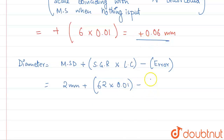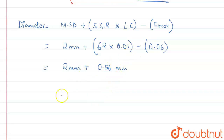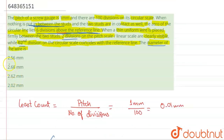So this comes out to be: 2mm + 0.62 − 0.06, which gives us 2mm + 0.56mm = 2.56 millimeters. Adding them together, we get 2.56 millimeters as our final answer.